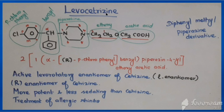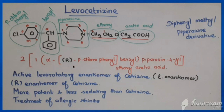The next drug is levocetirizine. It has a similar structure to cetirizine — cetirizine exists in both plus and minus forms, but levocetirizine has only the minus (levo) form. It also comes under diphenylmethylpiperazine derivatives, which include chlorcyclizine, meclizine, buclizine, cetirizine, and levocetirizine. The chemical name is the same as cetirizine but with capital R indicating the R-enantiomer — the active levorotatory enantiomer of cetirizine.